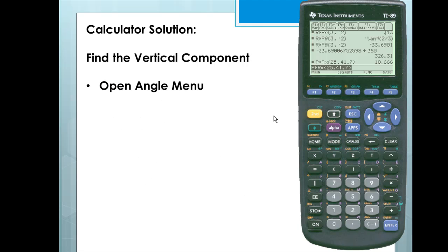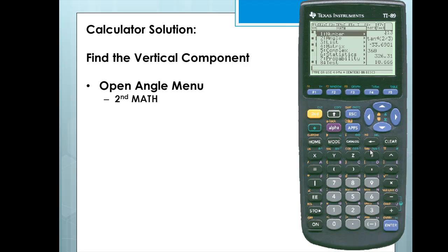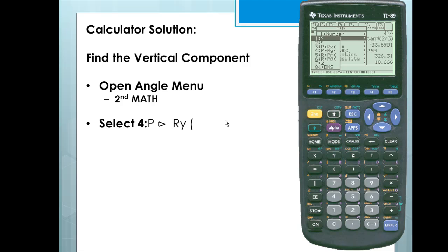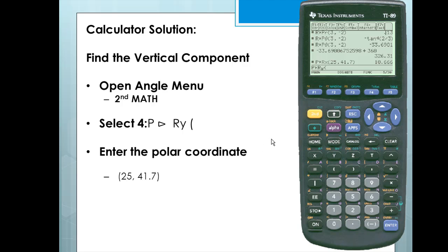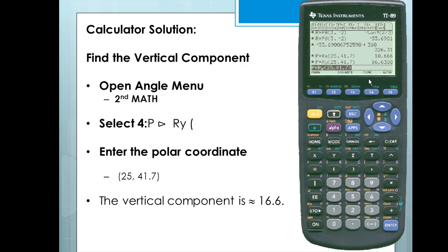To find the vertical component, we'll open the angle menu again with 2nd and Math, scroll down to Angle, and right-click. We'll select the fourth option and press Enter. We'll enter the polar coordinate 25 comma 41.7, close off that function, press Enter, and we have a vertical component of 16.6.